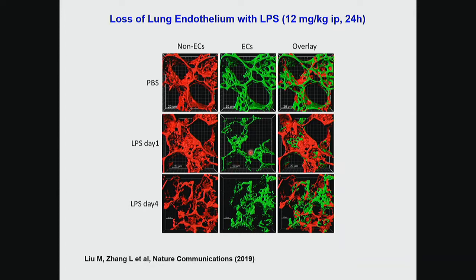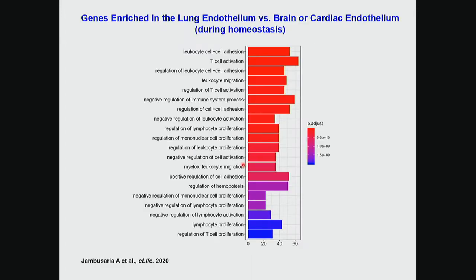We asked: what drives the regeneration in the green cells, and what drives the injury in the first place? To our surprise — in this eLife paper you can look up — when we compared the blood vessels of the lung, the brain, and the heart using the same injection of bacterial toxin into the bloodstream, it was the lung that had the strongest inflammatory response. The blood vessels of the lung activated all these genes involved in immune host defense, immune cell activation, and leukocyte proliferation, much more than the brain and the heart.